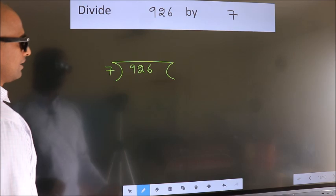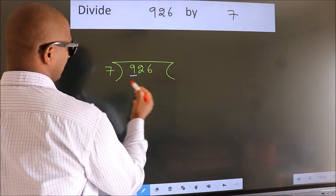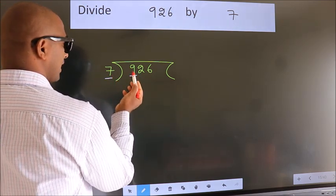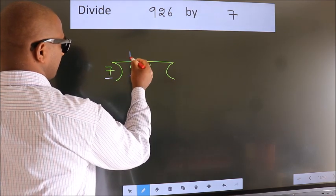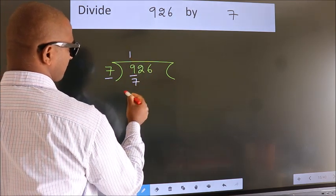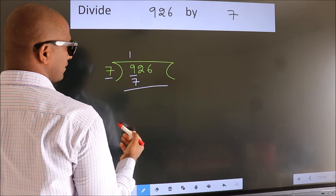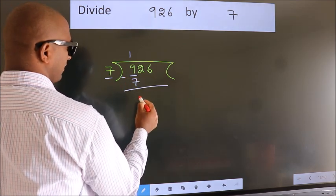Next, here we have 9, here 7. A number close to 9 in the 7 table is 7 times 1 is 7. Now we should subtract. We get 2.